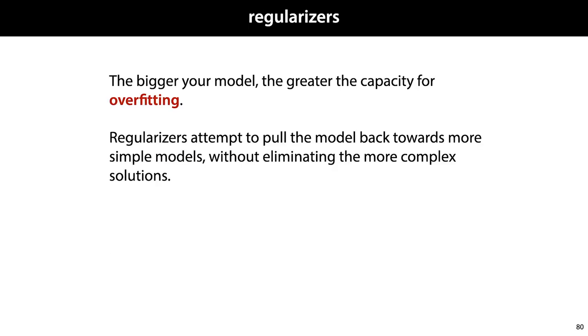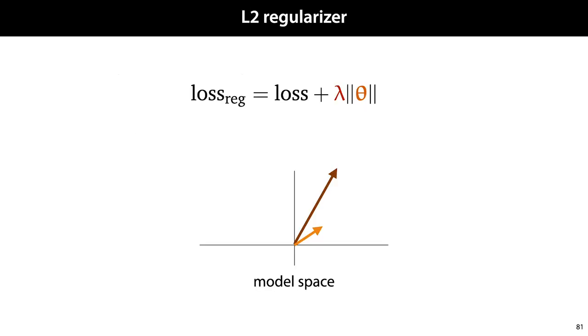Finally, let's look at regularization methods. The bigger your model, the greater the capacity for overfitting. Regularizers are methods that attempt to pull the model back towards more simple models without completely eliminating the possibility for finding the more complex solutions. The L2 regularizer considers models with small parameters to be simpler and therefore preferable. It adds a penalty to the loss for models with larger weights. To implement the regularizer, we flatten all the parameters of the model into a single vector, compute its L2 norm, and add this to the loss multiplied by a hyperparameter lambda. That way models with bigger weights get a higher loss. If we think of our model space like this, then these two vectors represent models, and the length of these arrows for the two models represent the penalty that these models have to pay under this L2 regularizer. So the penalty term is much smaller for the orange model than for the brown model, so the only way we would choose the brown model over the orange model is if its loss was that much lower that it would compensate for this extra penalty.